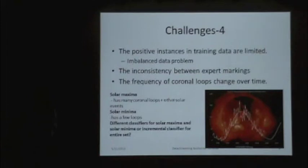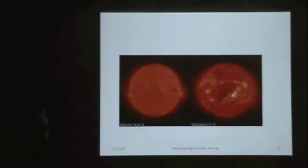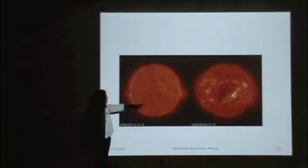If we train our system based on solar maxima, we will miss the images without loops. We have to learn from those images without loops too. I want to show one example here. This is the quiet one, there are not many activities. The other one is from 2002, from solar maxima. You can see many events.